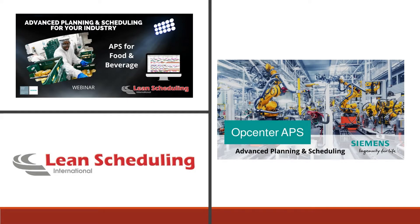Good afternoon or morning depending on where you're located. I'm Chris Brewer, Customer Development Manager for Lean Scheduling International. We're so glad you've taken some time out of your busy schedules to join us today for this webinar on Advanced Planning and Scheduling for the Food and Beverage Industry. We are set for one hour today where we'll walk through Ops Center APS, formerly known as Preactor Advanced Planning and Scheduling, and show you solutions to those common planning and scheduling headaches that you all face in F&B.